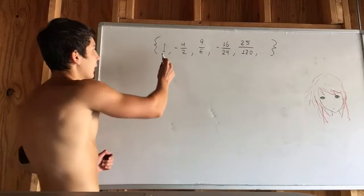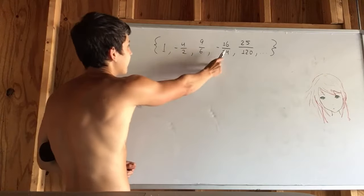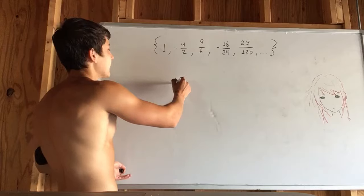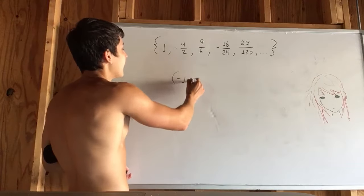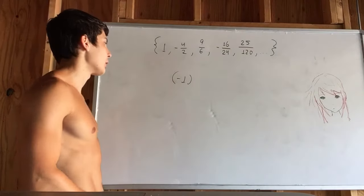So first we notice that this is alternating. So we have positive, negative, positive, negative, positive, negative. That tells us that we're going to need to have negative 1 raised to some power, which causes that alternation.